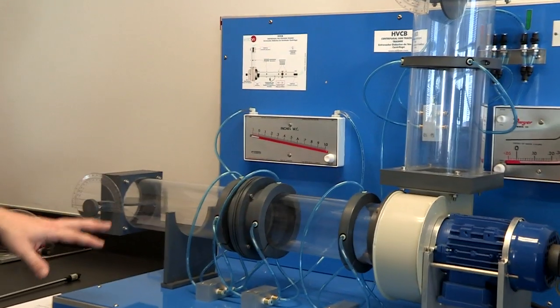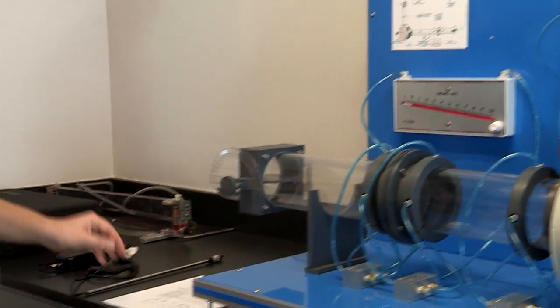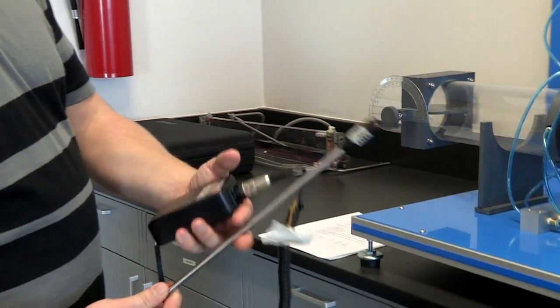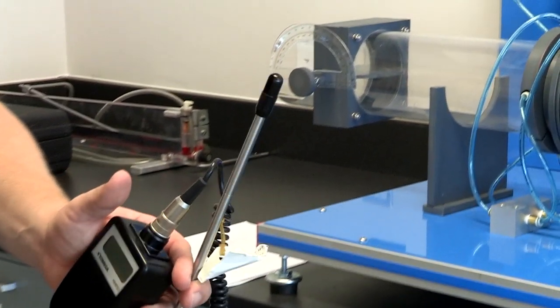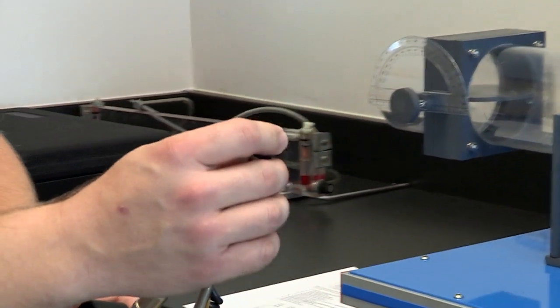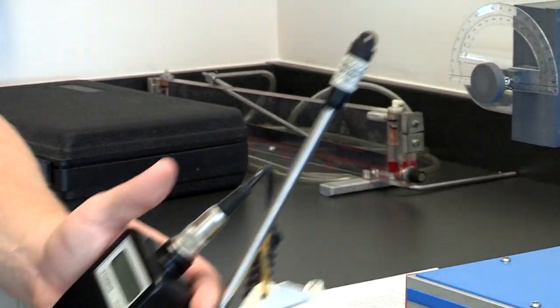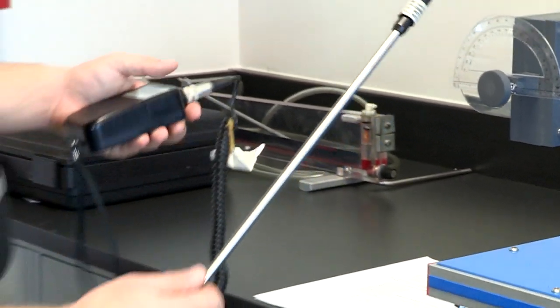This right here is a hot wire anemometer. Right now it's got the rubber cap on it. When it's not in use, you want to make sure to put the cap back on so nothing gets stuck to that wire. It's very important because that's what we're going to be testing with.